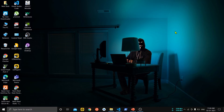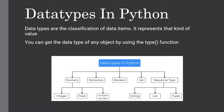Hello guys, welcome back to the complete Python series. In this video we are going to see the different data types in Python and some basic differences between them. In programming, data type is an important concept — variables can store data of different types and different types can do different things. Data types are the classification of data items. You can get the data type of any object by using the type() function, which returns the data type of the variable.